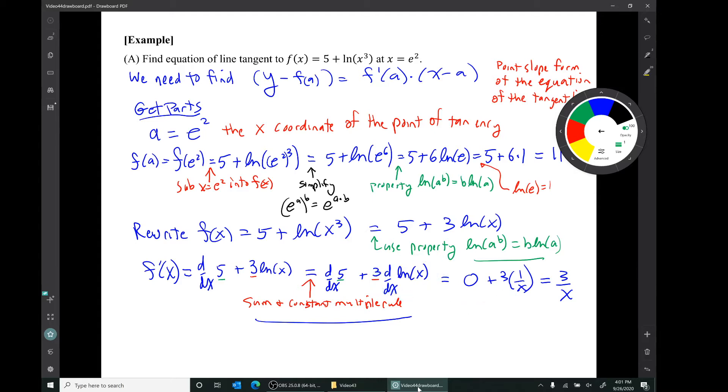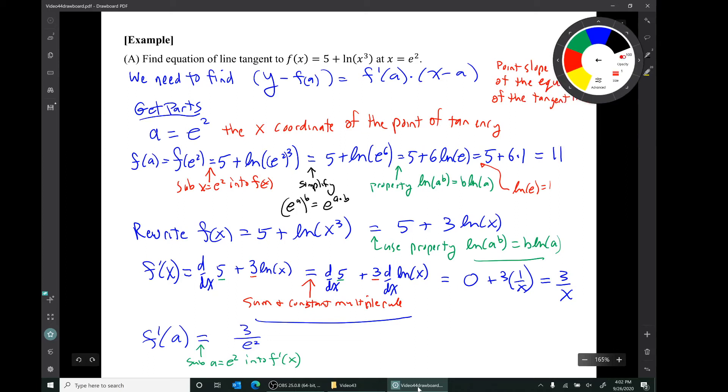Now we're ready to substitute in x = a in order to get f'(a). There's our f'(a). Now I forgot to label our earlier part. When we found f(a), we got this number 11. That's the y-coordinate of the point of tangency. And when we found f'(a), we got this number 3/e². That's the slope of the tangent line.